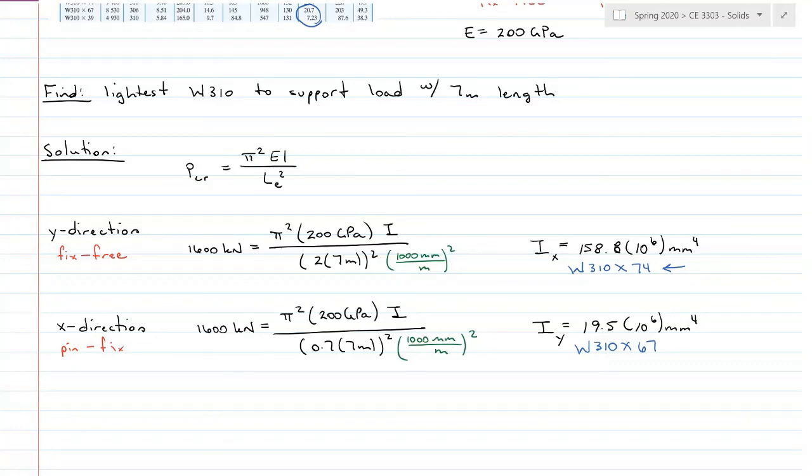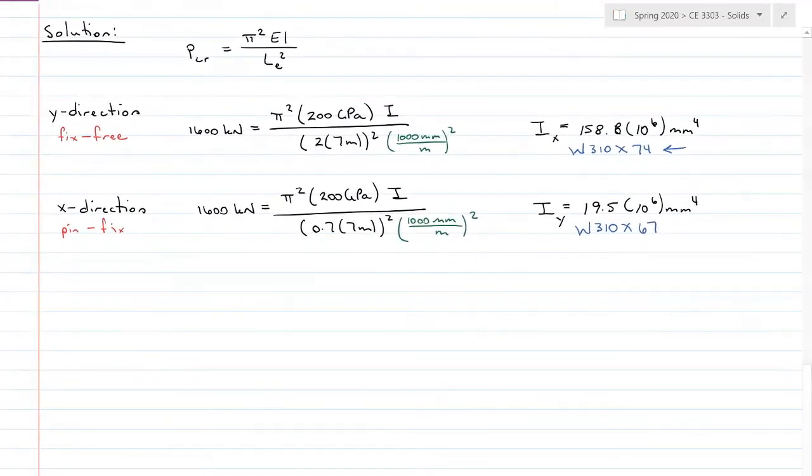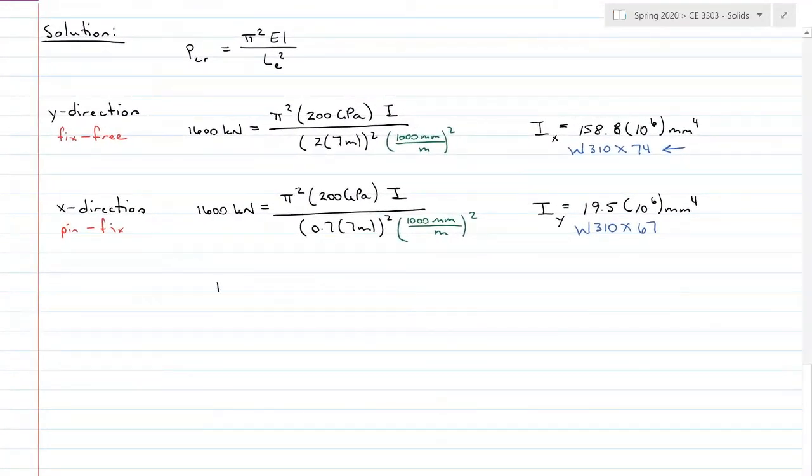It controls in the Y direction. We want it to bend about those flanges because that's what the flanges are there for, for bending. So we're going to pick that larger cross section. And that's good because if we look over here in the Y direction, that means that the Y inertia is 23.4, which is definitely greater than 19.5. So we're going to tell our construction engineers to design with a W 310 by 74.